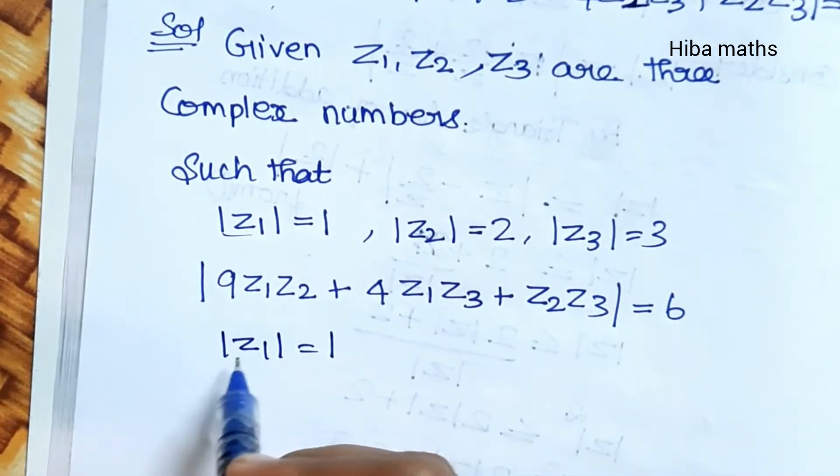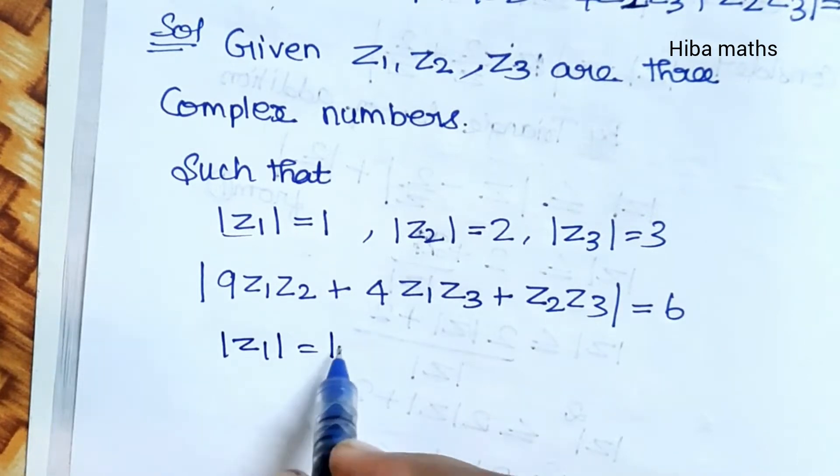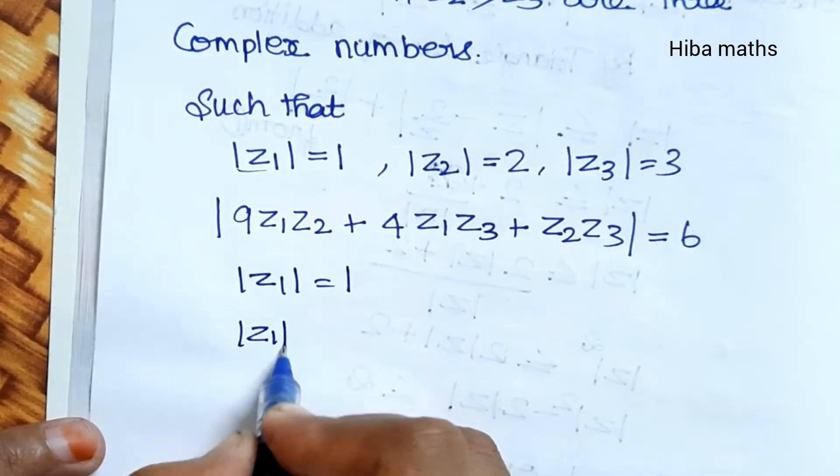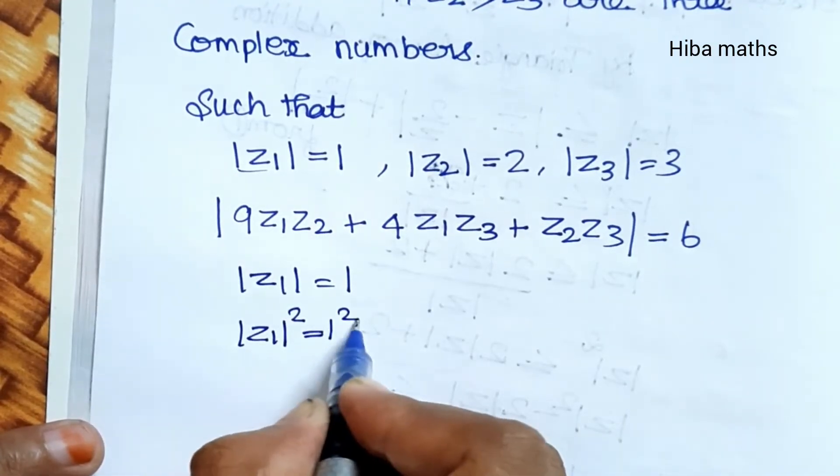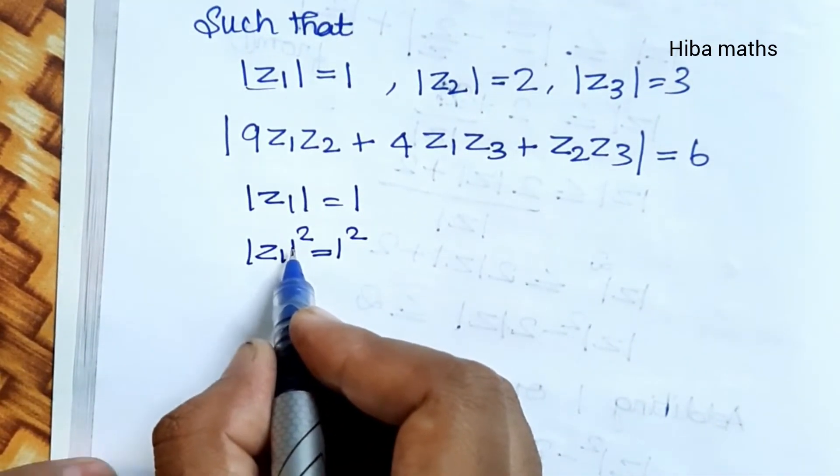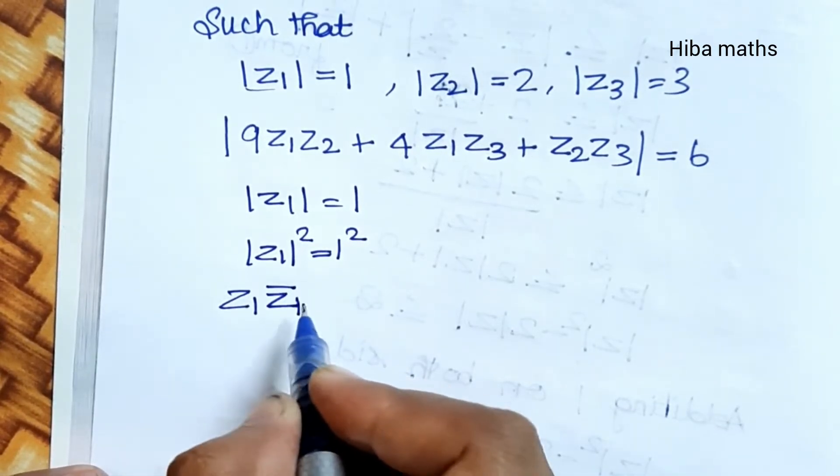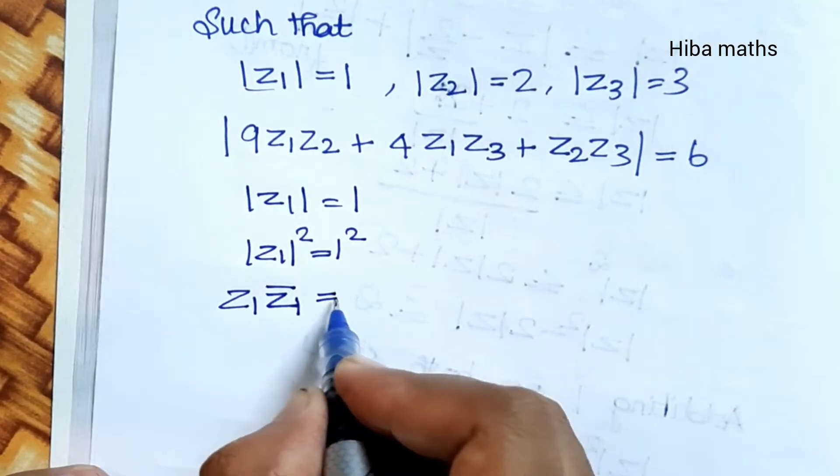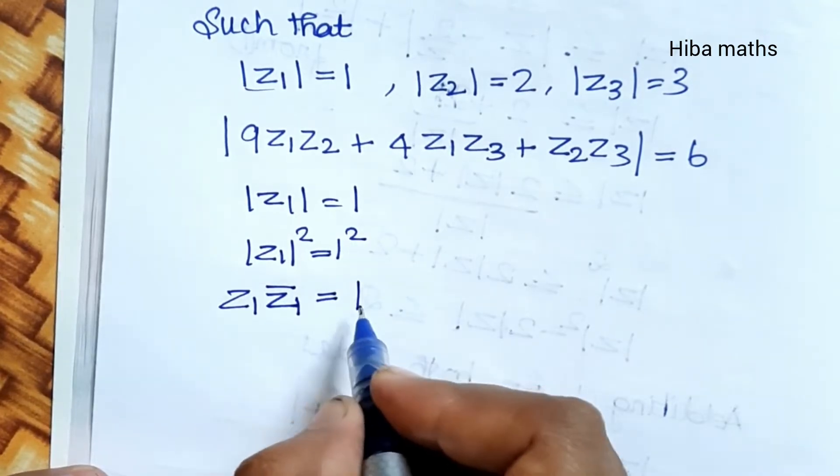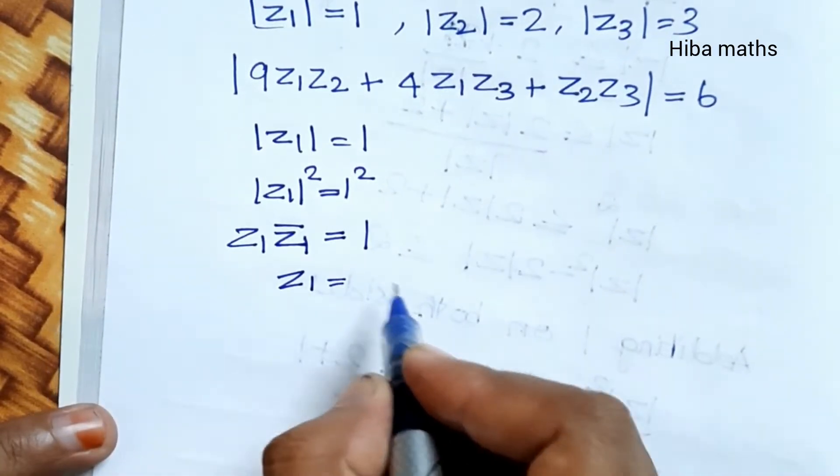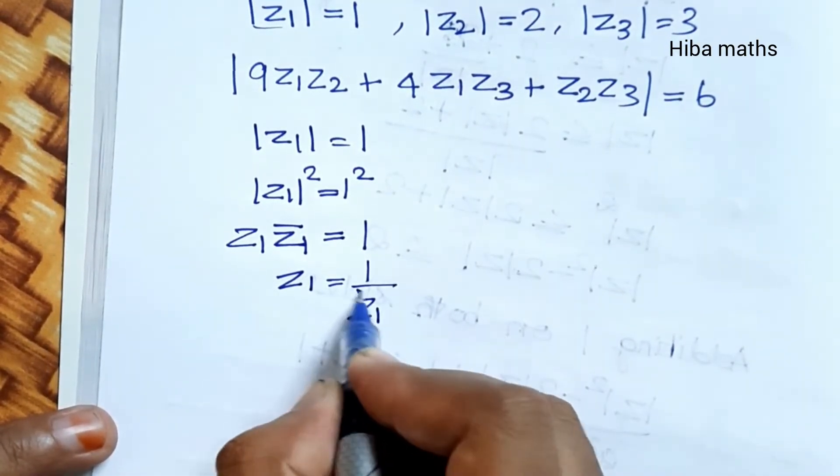First, modulus of Z1 is equal to 1. Now we are going to square both sides. Modulus of Z1 whole square is equal to 1 squared. So Z1 times Z1 bar is equal to 1.